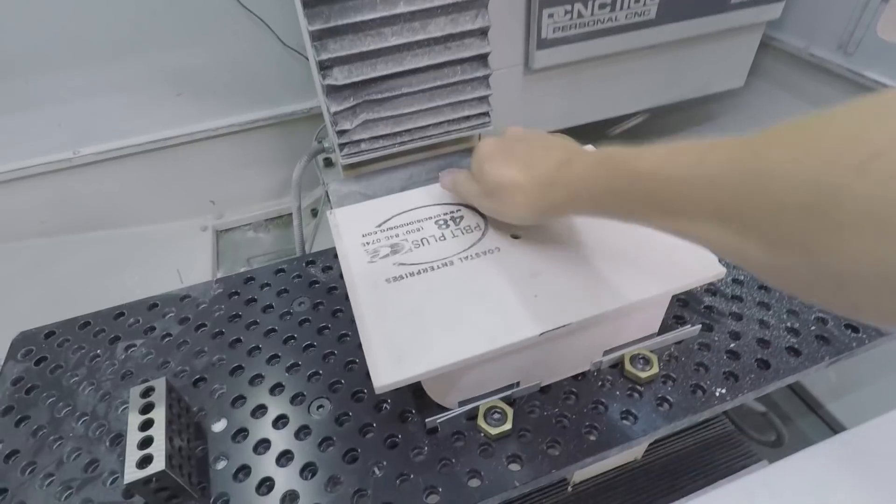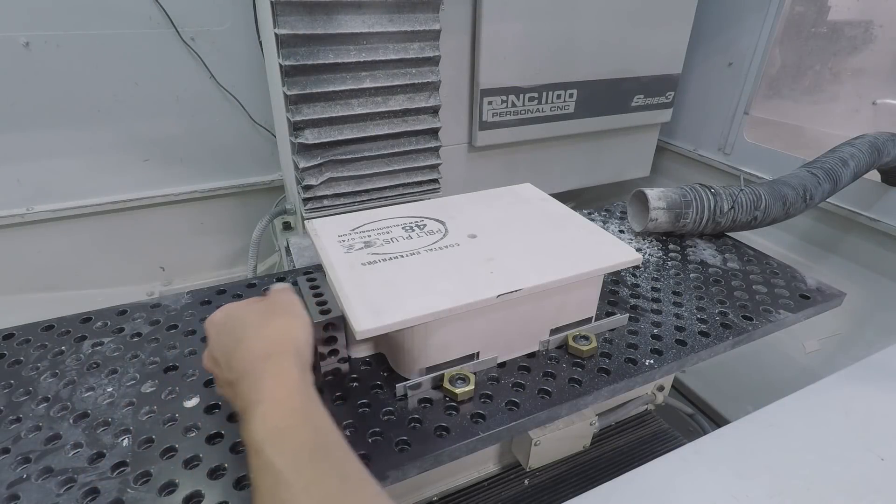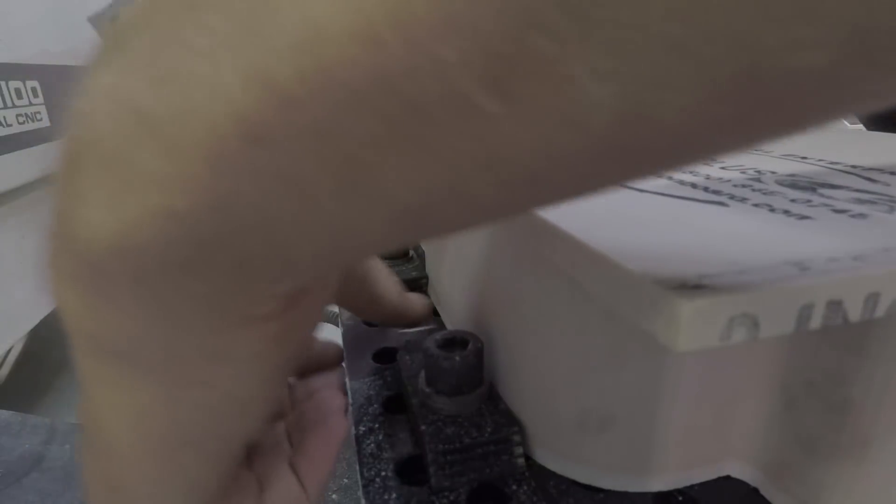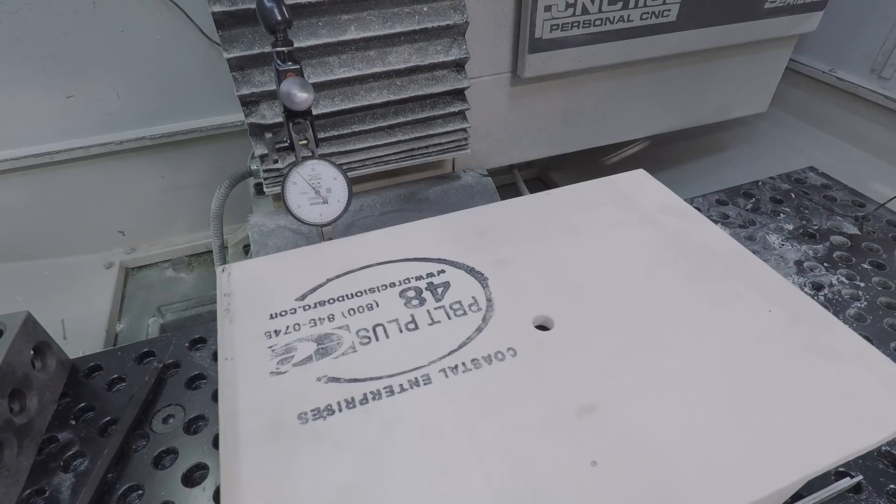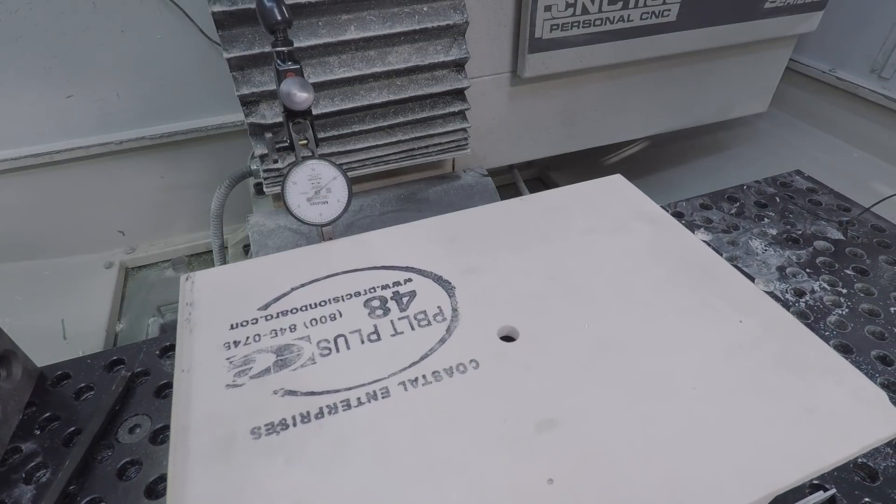Along with some shims and a Saunders Machine Works fixture plate to hold it for the final operation. The hat top on the part meant we didn't have easy access to check the alignment, but getting a little creative with an indicator at an angle solved that problem.